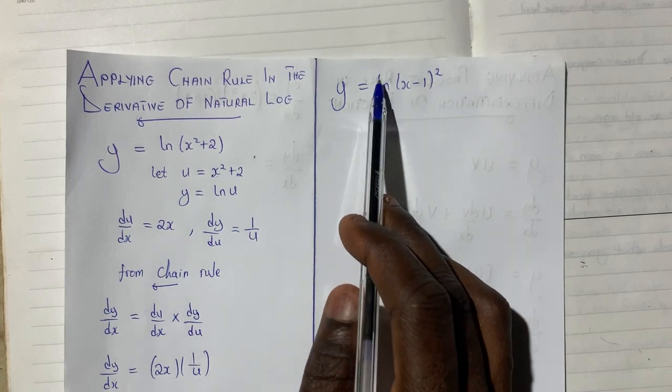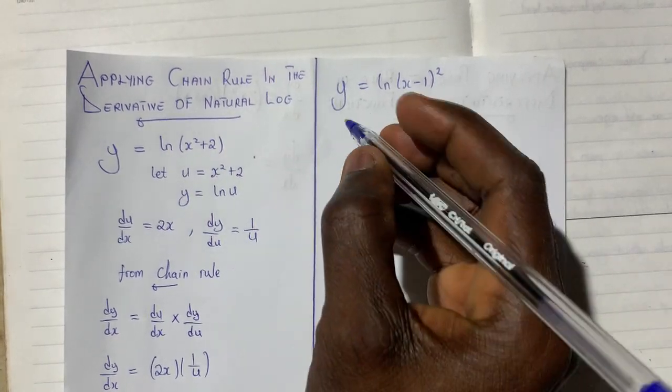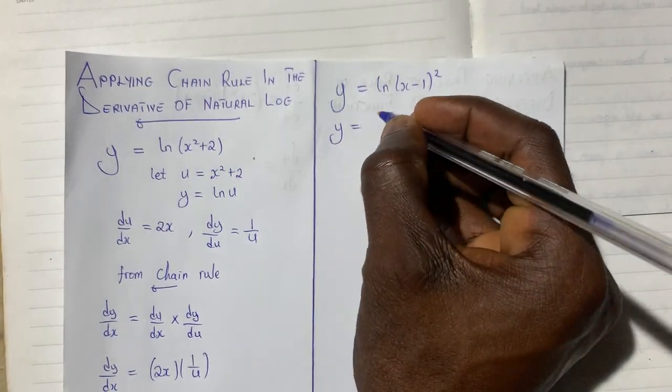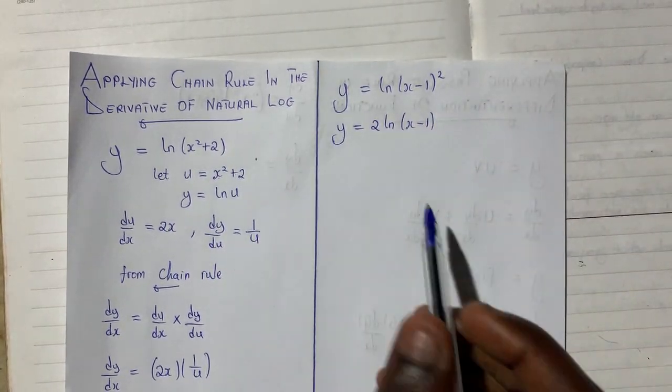I will use that principle to make the work easier for us. We can rewrite this equation by saying y will give us 2 ln x minus 1. Now when we look at this, this is behaving like a product rule.